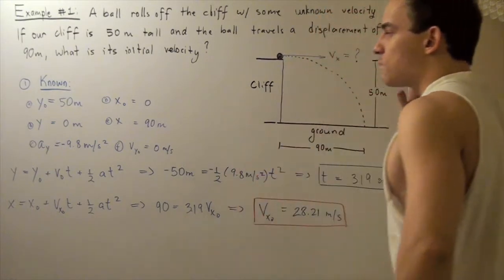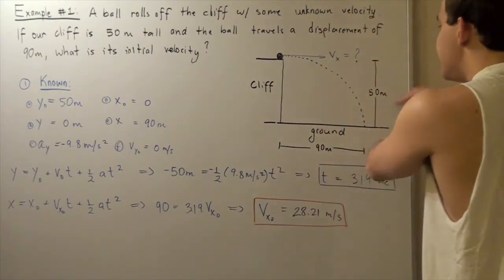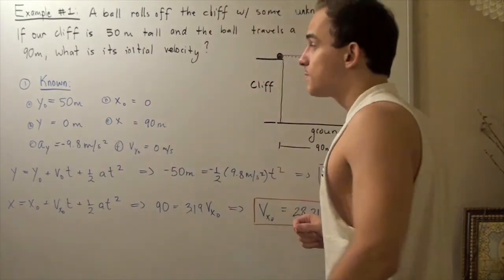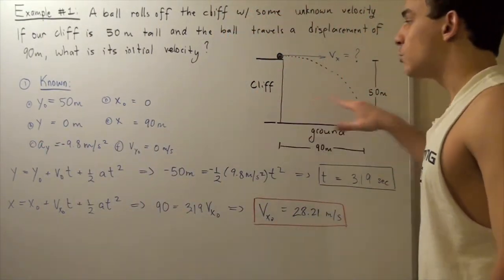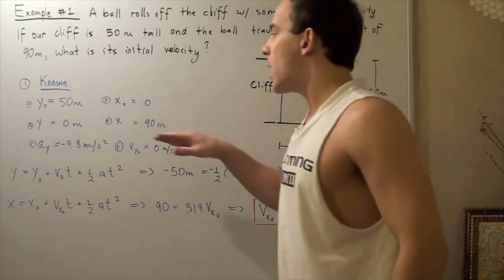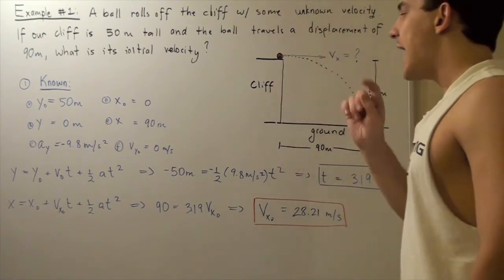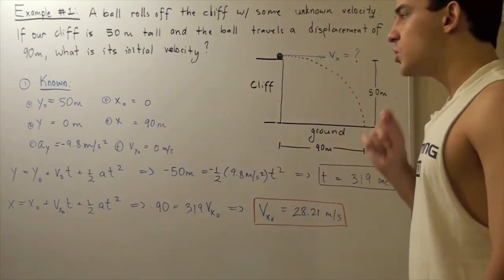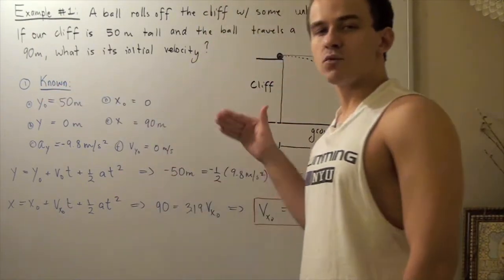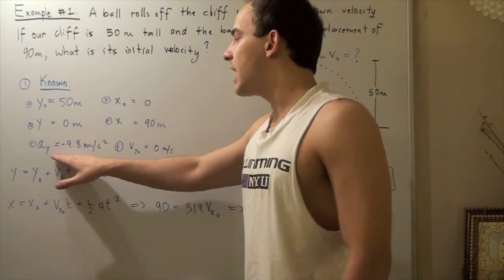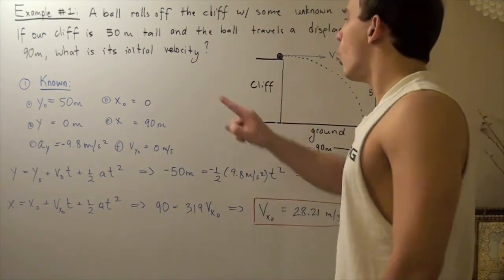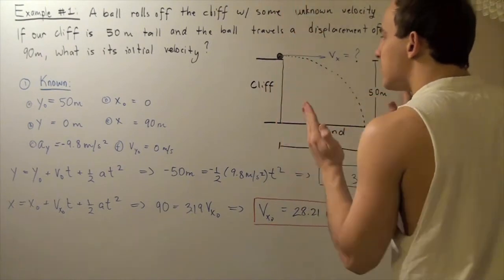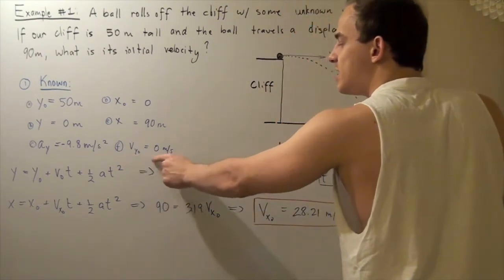Let's look at what else we know. Our initial y is 50 meters — the cliff is 50 meters high — and our final y is 0 meters, so the ground represents 0 meters. Our initial x is 0, and our final x is 90 meters away from the cliff — that's where the ball hits the ground. We also know that our acceleration along the x-direction is 0, and our acceleration along the y-direction is negative 9.81 meters per second squared. Since the ball was rolling on the cliff on a straight path, its initial vertical velocity is 0 meters per second.